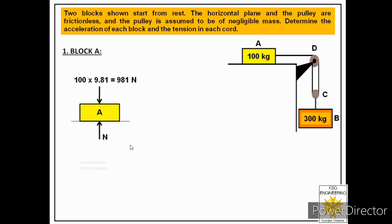Next, we show the normal pressure acting perpendicular to the horizontal surface on which the block rests. Since block A is connected to a cable and the 300 kg block will move downward, block A will move to the right. There will therefore be tension in the cable acting towards the right, which we label T1.